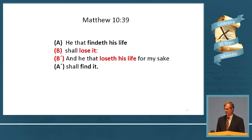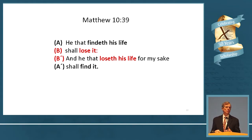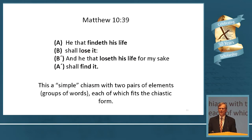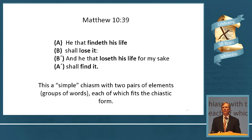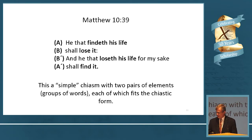Matthew 10:39 — beautiful structure. 'He that findeth his life shall lose it; he that loseth his life for my sake shall find it.' So A and A-prime are both 'find,' and B is 'lose' — find, lose, lose, find. This is what we call a mathematically simple chiasm. The only reason we call them simple is because the math is simple. It's because there are two instances of element A, two instances of element B, no instances of repeated elements elsewhere in the chiasm that don't fit the chiastic form, and no extra appearances of element A or B.